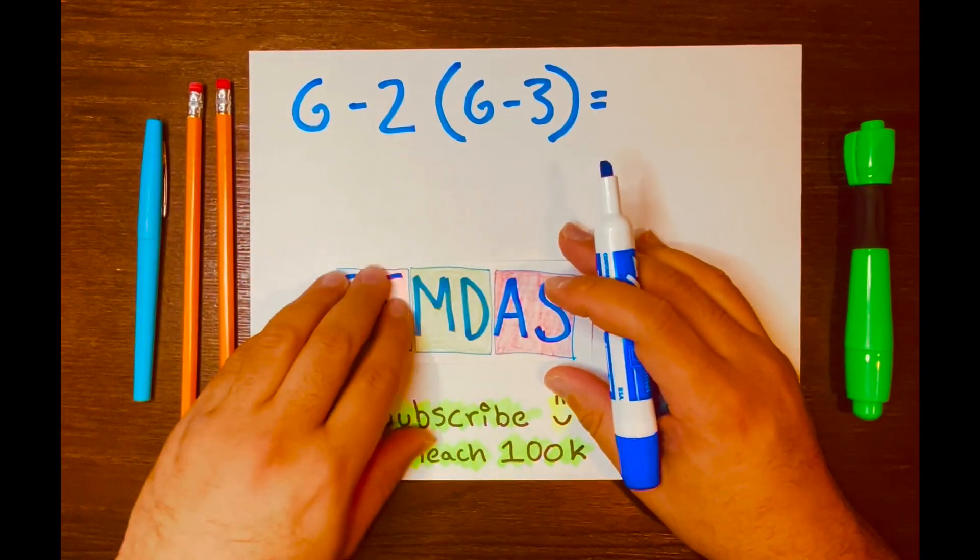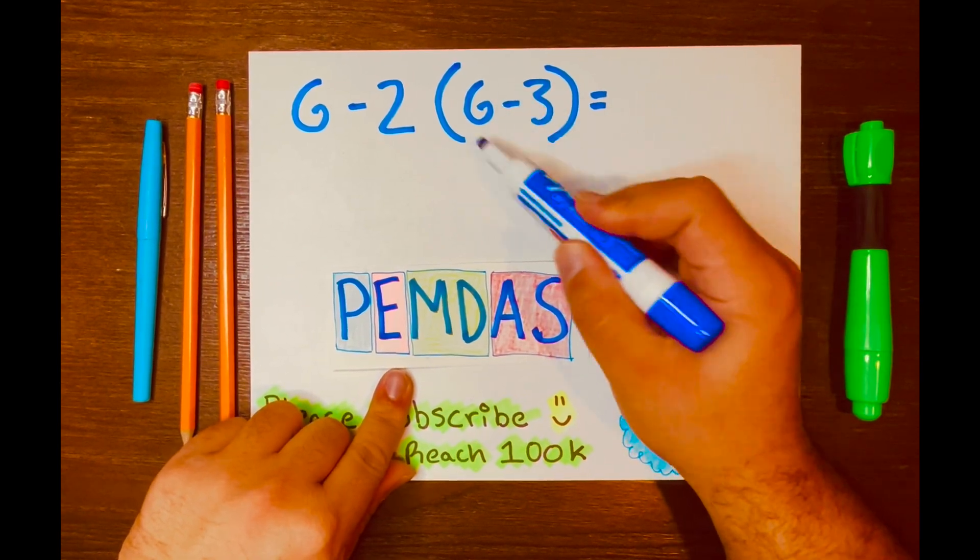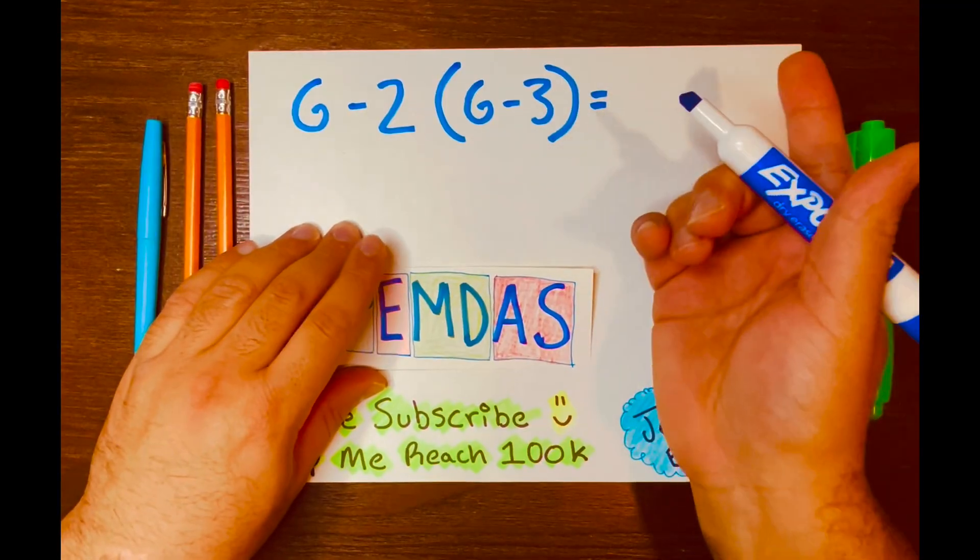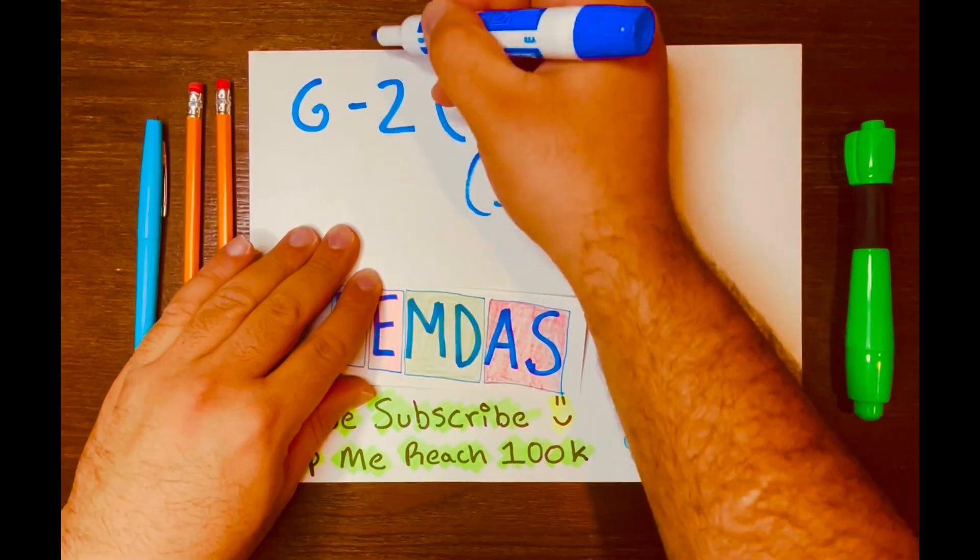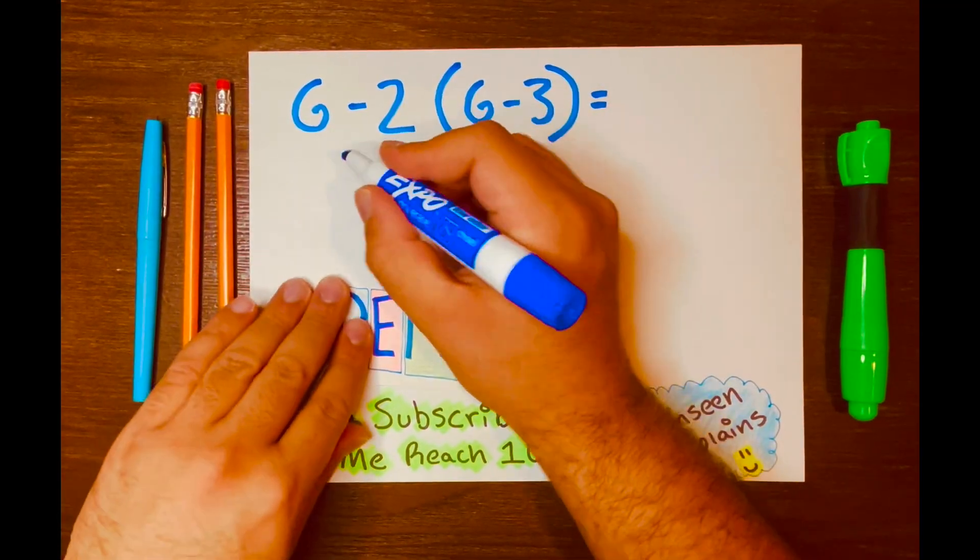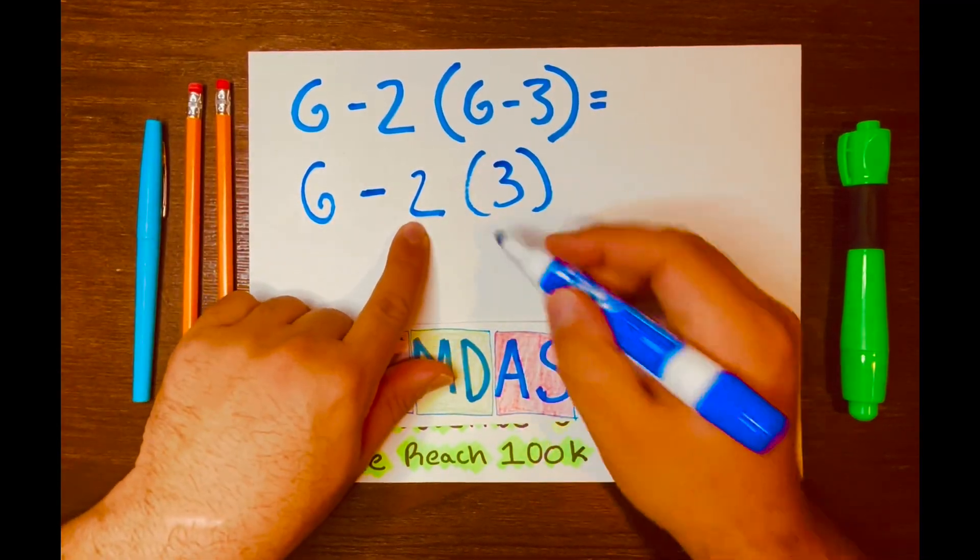So looking at my math problem, I do see parentheses. What's inside the parentheses goes first. So 6 minus 3 equals 3. Then keep the brackets, bring down the 2, bring down the subtraction symbol, and then the 6. Now you have 6 minus 2 times 3.